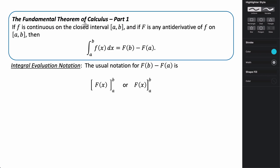In this video we're going to be taking a look at the fundamental theorem of calculus. The fundamental theorem of calculus has two parts and it is the theorem that bridges the gap between differential and integral calculus. The first part says: if little f is a continuous function on the closed interval from a to b, and if capital F is any antiderivative of little f on that interval, then the integral from a to b of f(x) dx is equal to the antiderivative evaluated at b minus the antiderivative evaluated at a.